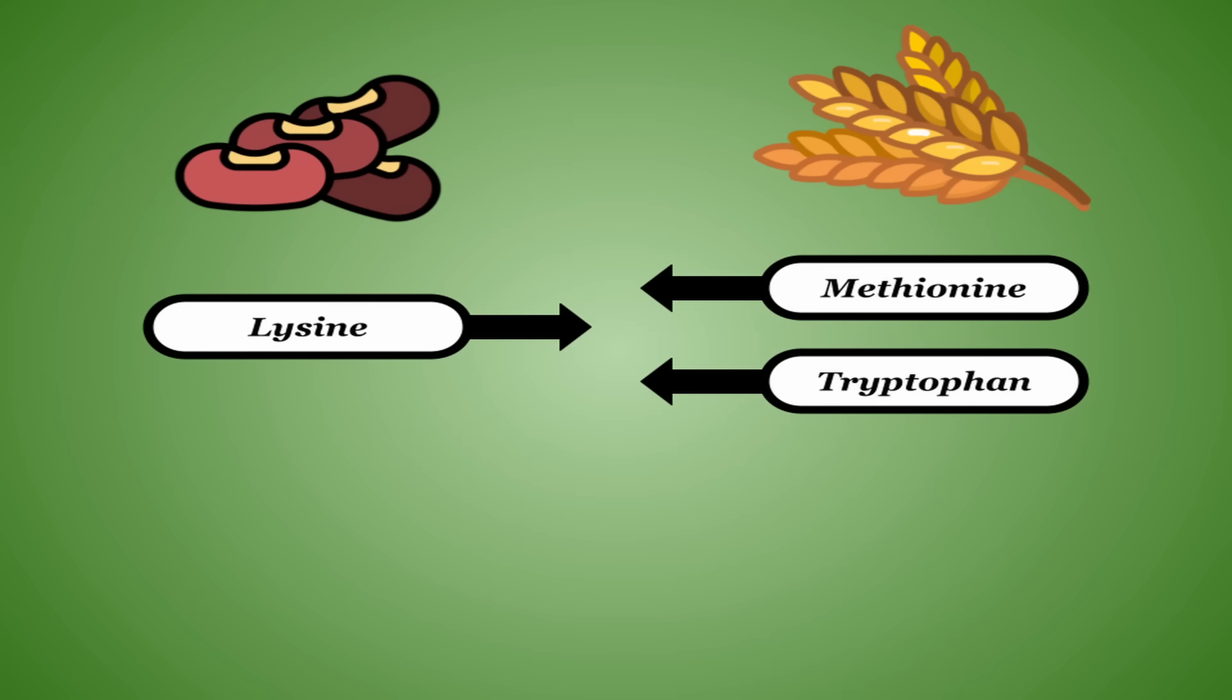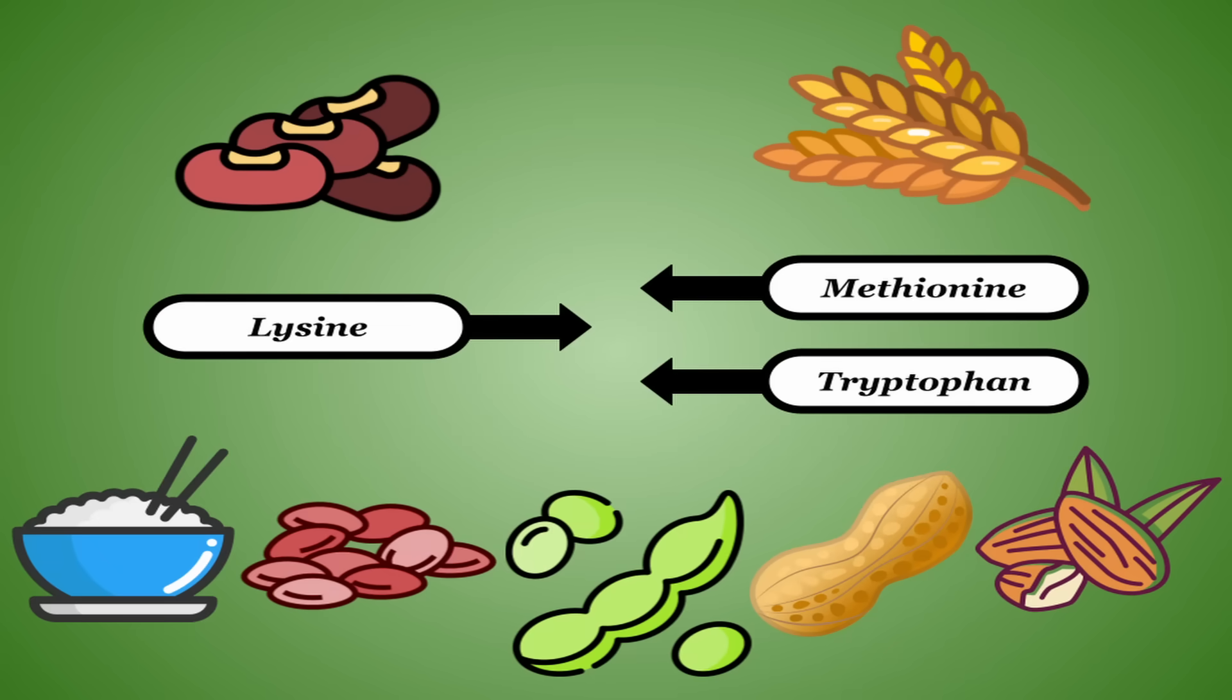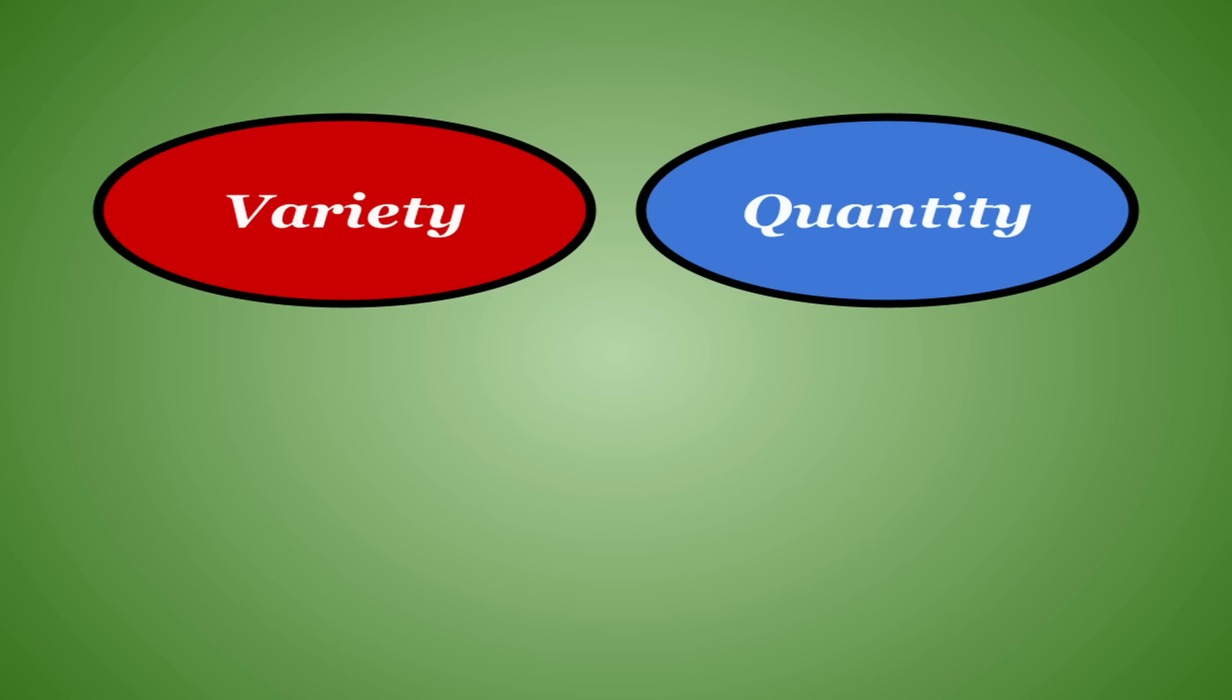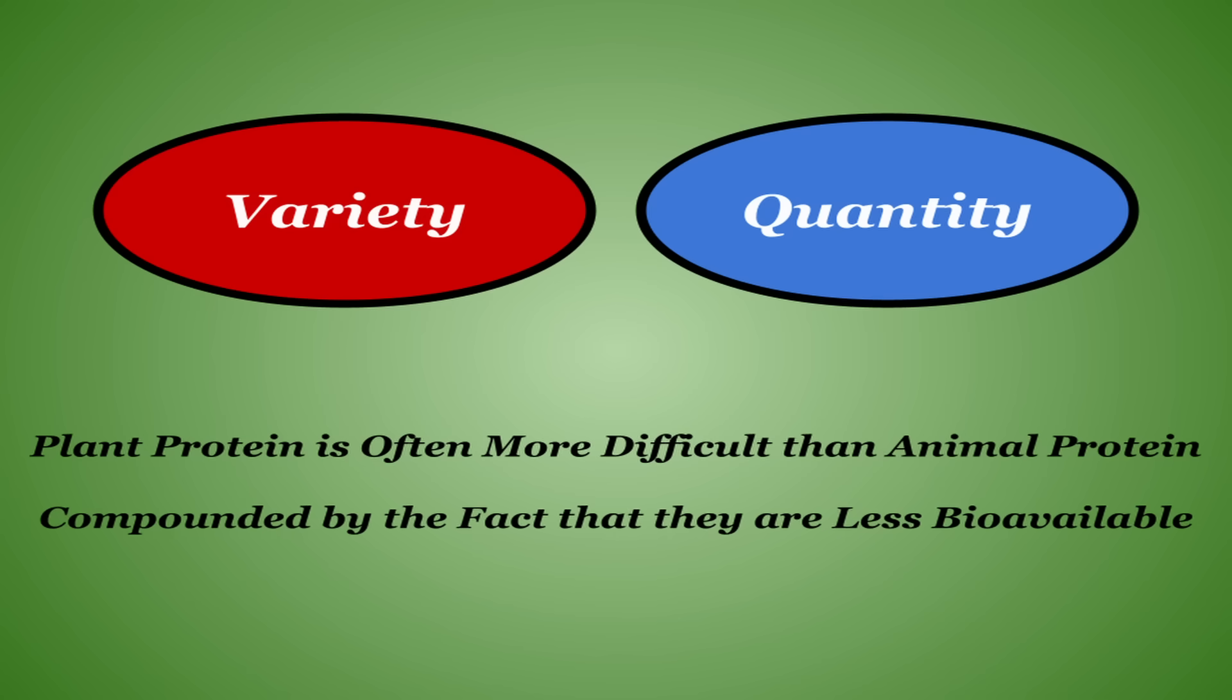Fortunately, if you're on a plant-based diet, you generally don't have to worry about pairing foods with specific amino acids as long as you eat a diverse array of plant foods. Variety and quantity together are generally good enough, but plant protein is often just much more difficult than animal protein. This is only compounded by the fact that they are often less bioavailable. If you choose to go on a plant-based diet, rest assured that protein is doable, just a lot less convenient. And if you're not exclusively on a plant-based diet, you can feel free to use them supplementally.